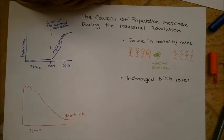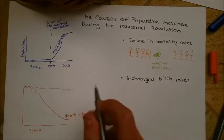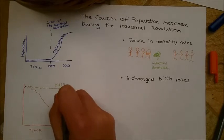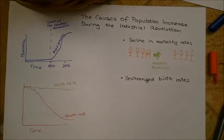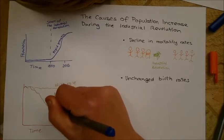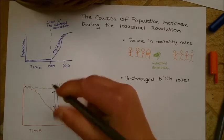So the big difference, which is known as natural increase, is caused by the fact that the birth rates have remained unchanged, all while the death rates declined.